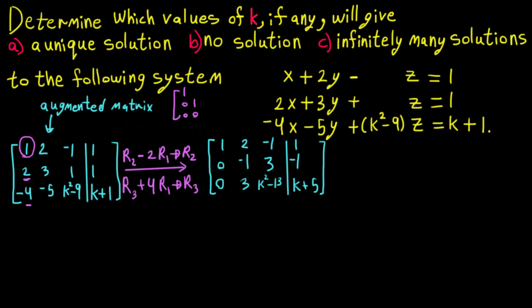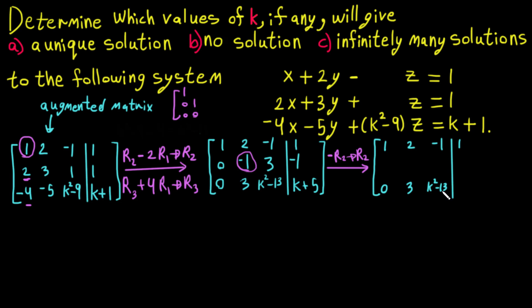Now we multiply R2 by negative 1 to get a leading 1 in that row. These two columns stay the same; the new R2 becomes: 0, 1, negative 3, 1.